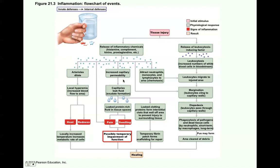The increased capillary permeability means the capillaries are going to leak fluid. It's not blood — just fluid, called exudate. The leaked protein-rich fluid goes into the tissue spaces, leading to pain, swelling, and possible temporary impairment of function, which will help with healing. The inflammatory chemicals attract neutrophils, monocytes, and lymphocytes, causing them to migrate to the injured area. The leaked clotting proteins form interstitial clots that wall off the area.